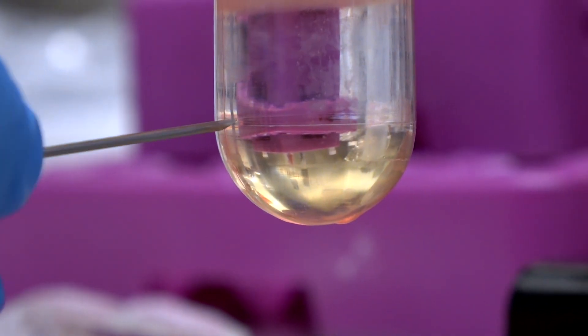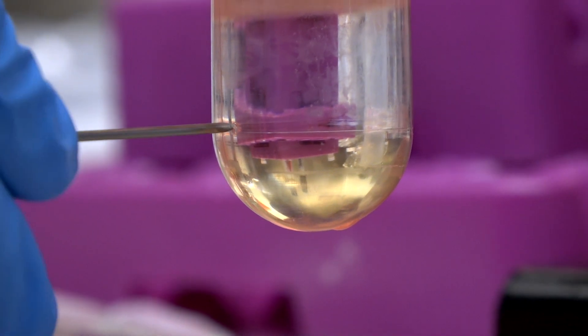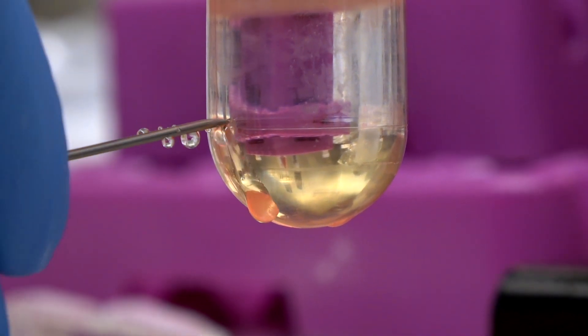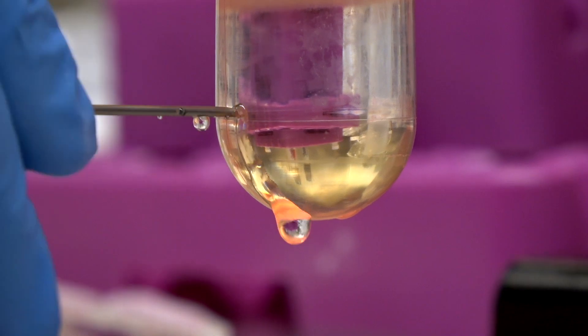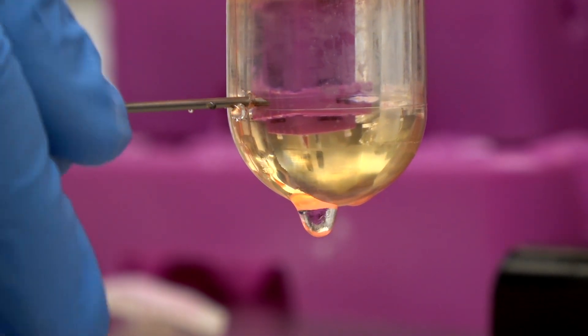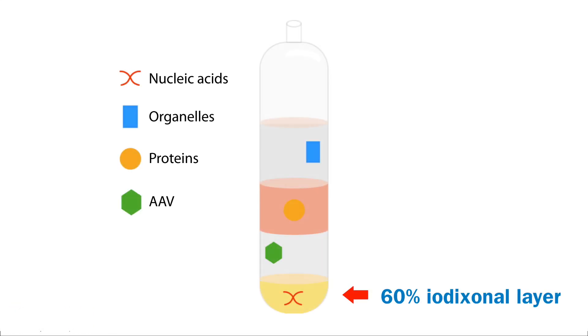First, we'll puncture the column at the bottom of the 40% layer. This is the needle from which the AAV solution will flow. We like to puncture in the yellow 60% layer, just slightly below the clear 40% layer. Position the needle far enough into the yellow 60% layer, such that none of the AAV-containing clear layer gets lost.